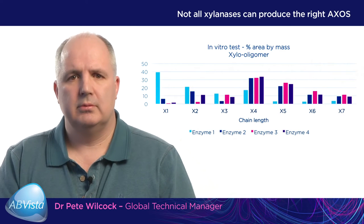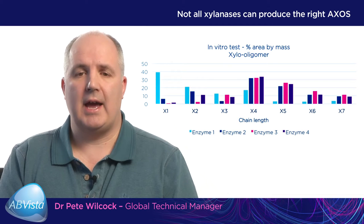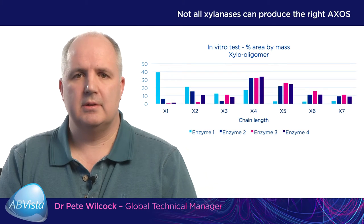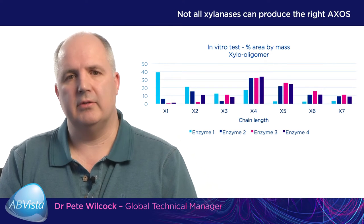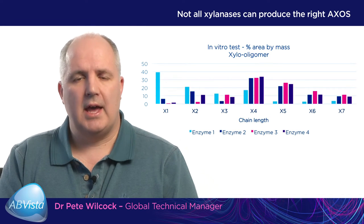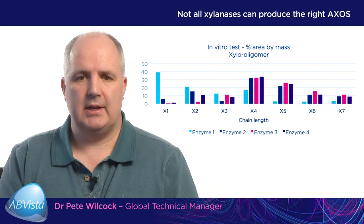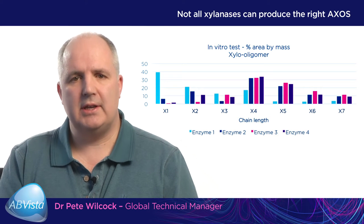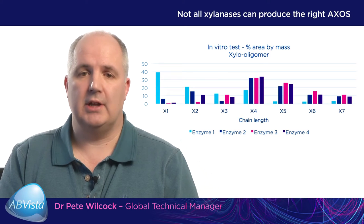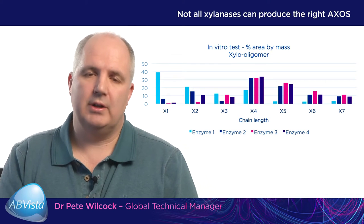Not all xylanases can produce the right or the same AXOS profile. This can be determined by the dose or the characteristic of the xylanase. Looking at a graph comparing four different xylanases, the x-axis shows x1 to x7, representing the chain length of the particular xylooligomer. X7 has seven links and x1 is effectively xylose.